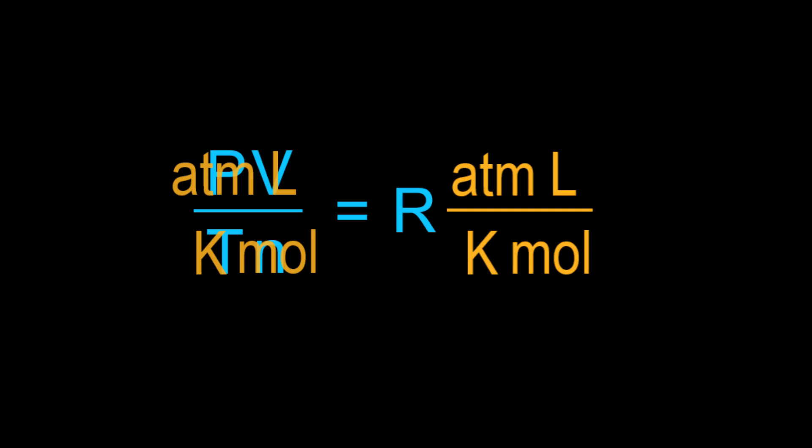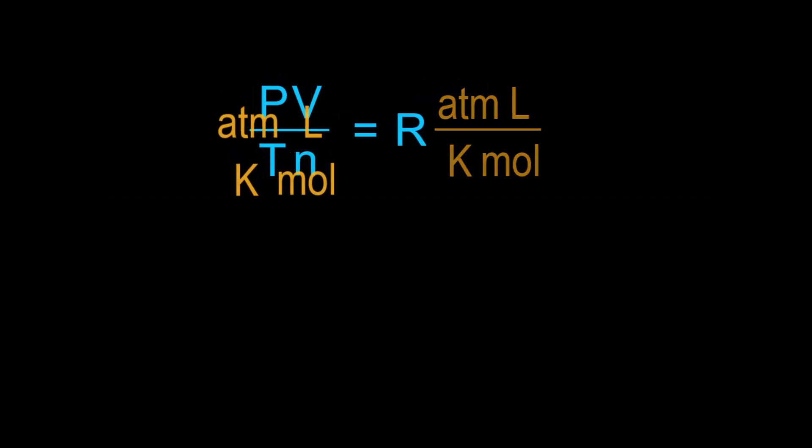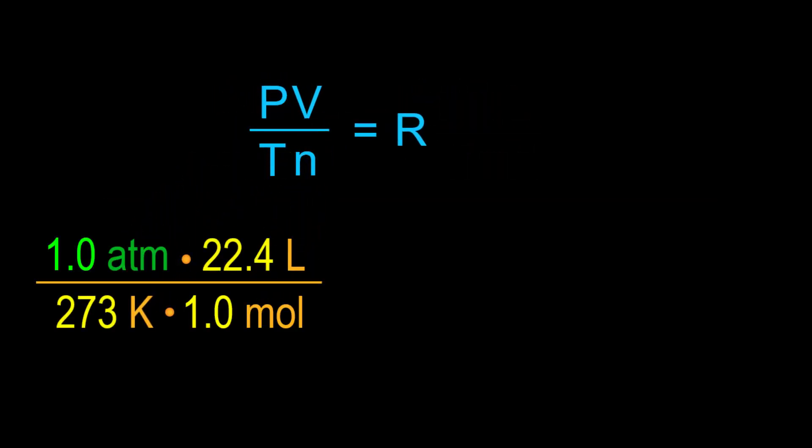However, we need to determine the numerical value of R, which will be guided by Avogadro's hypothesis that any two gases at the same pressure, volume, and temperature will have the same number of particles. Measuring one mole of gas at one atmosphere in 273K will occupy 22.4 liters, and so this is an R of 0.082 atmospheres liters per Kelvin mole.